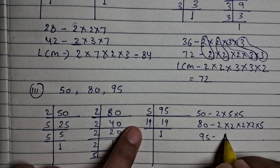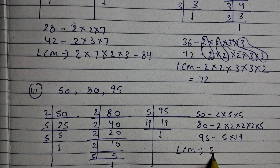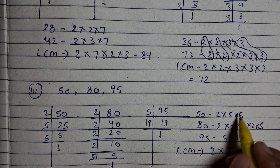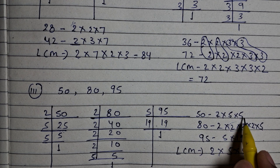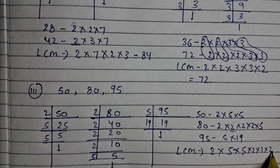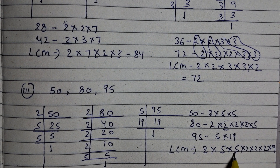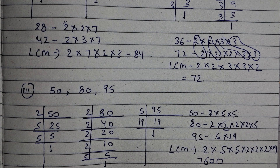Now we write: 50 = 2 × 5 × 5, 80 = 2 × 2 × 2 × 2 × 5, 95 = 5 × 19. We have one pair of 2, one pair of 5, then the remaining unpaired numbers: 2, 2, 2, 5, and 19 are also written. Multiplying: 2 × 5 = 10, 10 × 5 = 50, 50 × 2 = 100, 100 × 2 = 200, 200 × 2 = 400, 400 × 19 = 7600. So LCM is 7600.